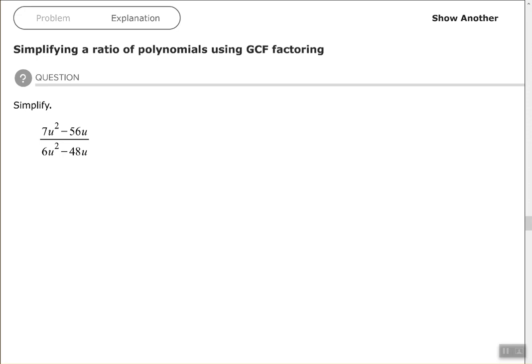So the key to simplifying these is factor and cancel. We're going back through our factoring steps. In this particular problem, we're factoring out the GCF.